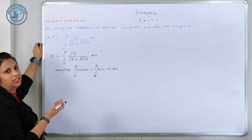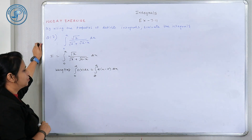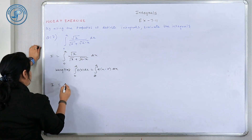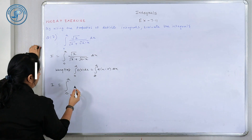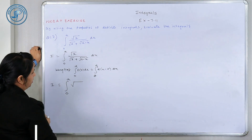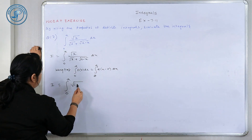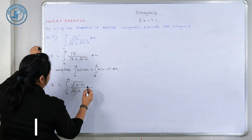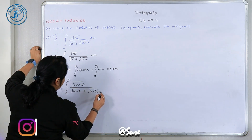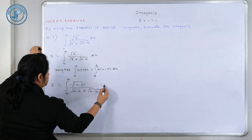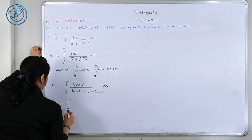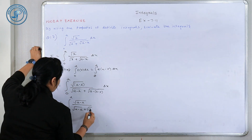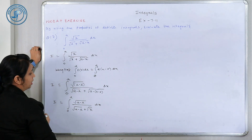आपने भी देखा होगा, अभी तक हम 16 questions कर चुके हैं — almost हर एक alternate question में यह property यूज़ की है। तो generally अगर 0 से A limit है, तो हम prefer करते हैं यह वाली property यूज़ करने का — बाकी question पर भी depend करता है। X को A minus X से replace करना है, और यहाँ पर भी X को A minus X से replace करना है। तो property यूज़ की, इसको simplify करते हैं: A minus X, and यह मेरा root X आएगा because A-A will cancel out.